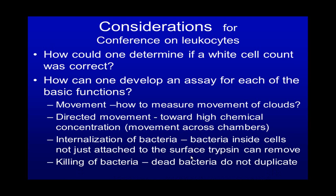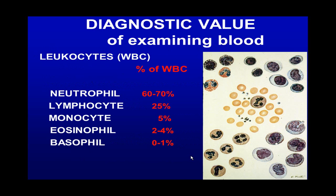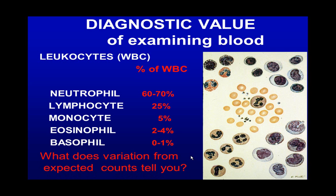How could you tell if bacteria were just eaten or actually killed? Dead cells would not duplicate and divide, so you need a system to measure the capability of these cells to yield bacterial growth. We'll return to the diagnostic value of examining blood — what does variation from expected values tell you about the production or disease state of the individual?